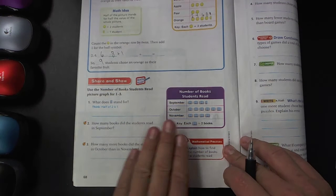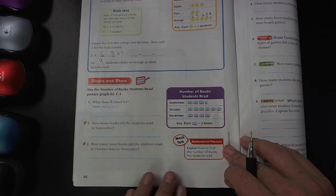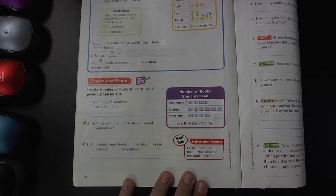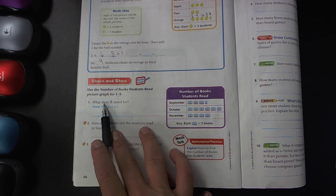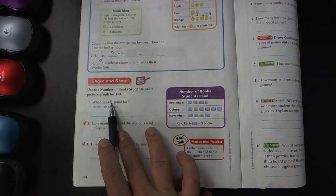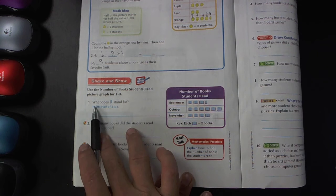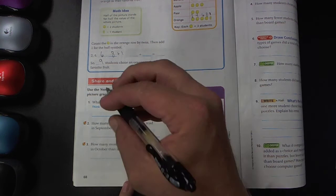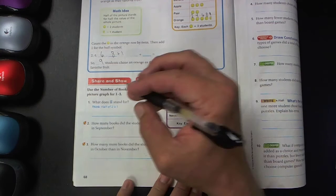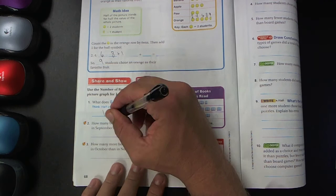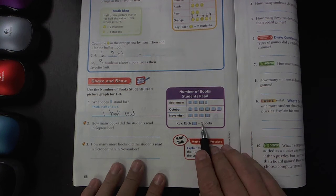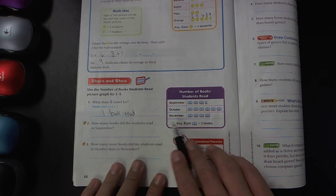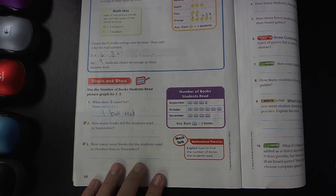All right, let's go ahead. Now that we've looked at the picture graph, let's go ahead and look at one, two, and three. Use the number of books students read picture graph for one through three. What does the half of a book stand for? Oh, it even gives you a little tip right there. Half of two is one. So it stands for one book read. Because half of one of these pictures is one, because a whole book is equal to two books.